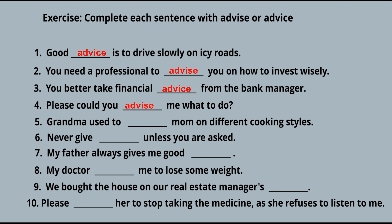Fifth: 'Grandma used to ___ mom on different cooking styles.' Grandma used to recommend, counsel, or instruct your mom on different cooking styles — so what comes here is the verb. 'Grandma used to advise mom on different cooking styles.'